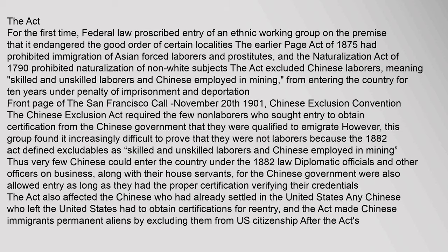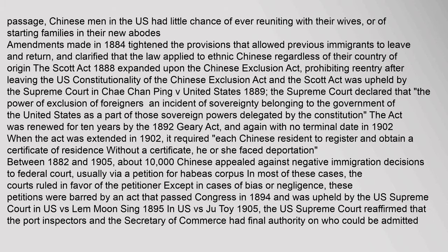Non-laborers found it increasingly difficult to prove their status because the 1882 act defined excludables broadly as skilled and unskilled laborers and Chinese employed in mining, meaning very few Chinese could enter the country. Diplomatic officials and other officers on business for the Chinese government, along with their house servants, were allowed entry with proper certification. The act also affected Chinese already in the United States: any Chinese who left had to obtain certifications for re-entry, and the act made Chinese immigrants permanent aliens by excluding them from U.S. citizenship. Chinese men in the U.S. had little chance of ever reuniting with their wives or starting families.